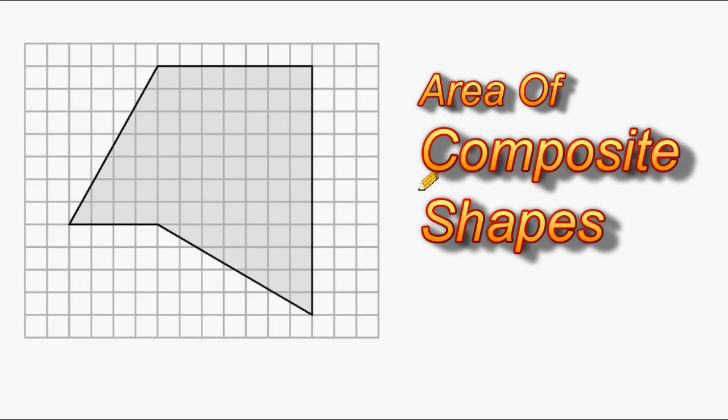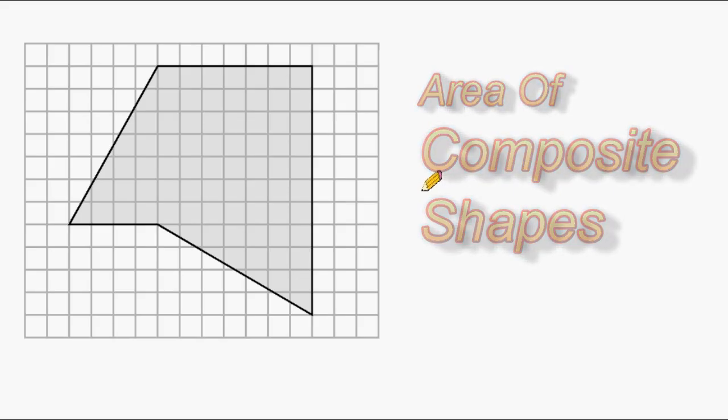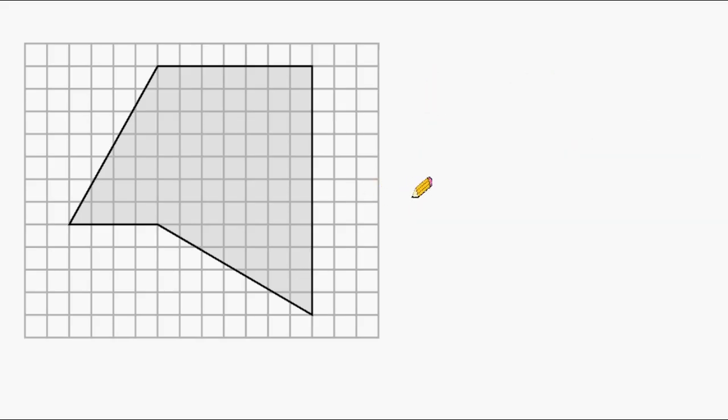What we have here is an irregular polygon located on top of this graph. We have to figure out the total area of this figure. So we're going to draw some lines to break this figure into easily recognizable shapes.